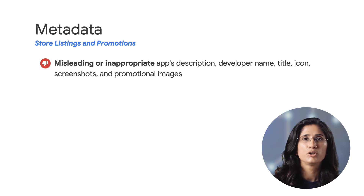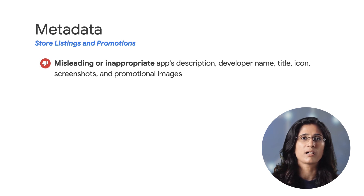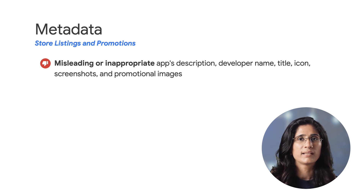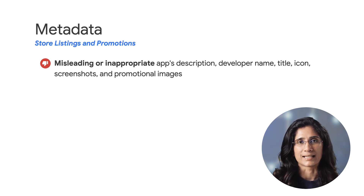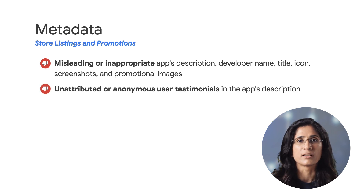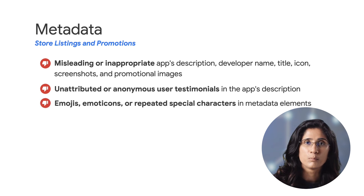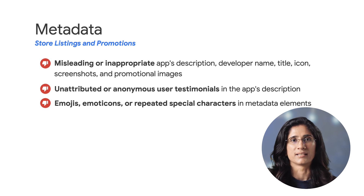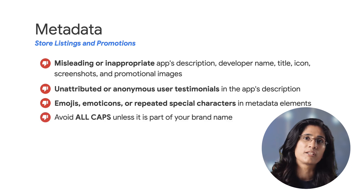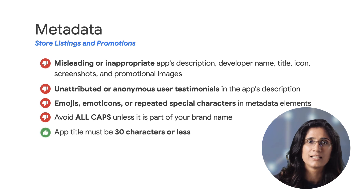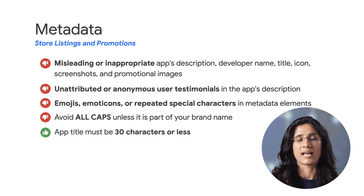For example, a new message dot indicator when there are no actual new messages, or a download or install symbol when the app is not related to downloading content. We also do not allow unattributed or anonymous user testimonials in the app's description, and emojis, emoticons, or repeated special characters in metadata elements. Please avoid all caps unless it is part of your brand name. And finally, your app title must be 30 characters or less.